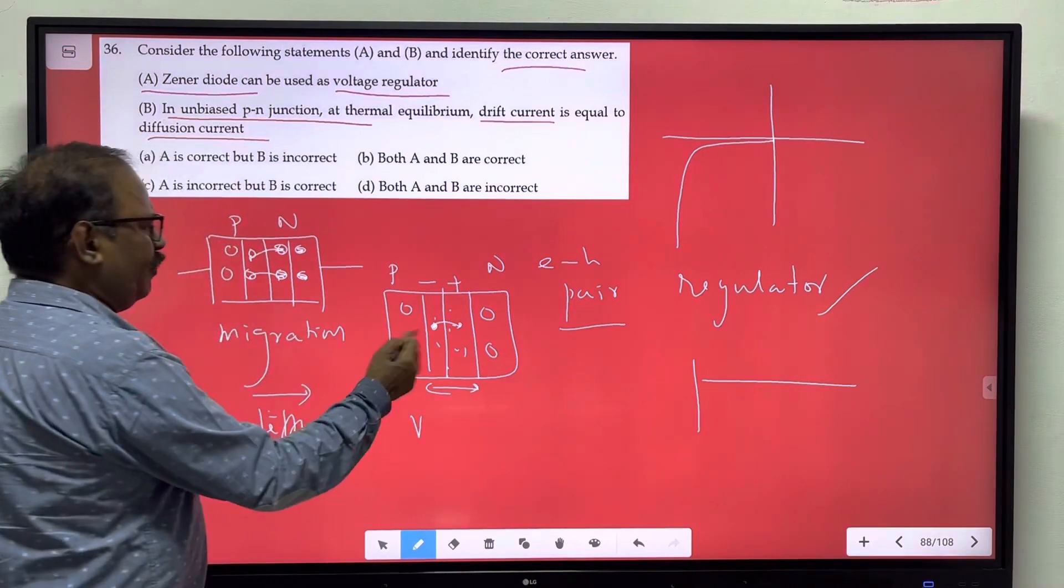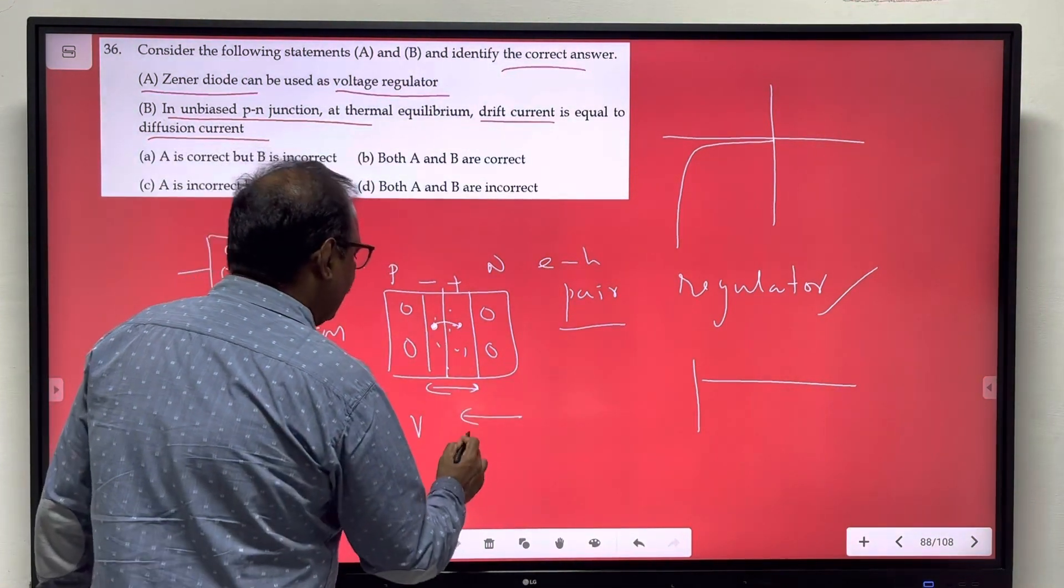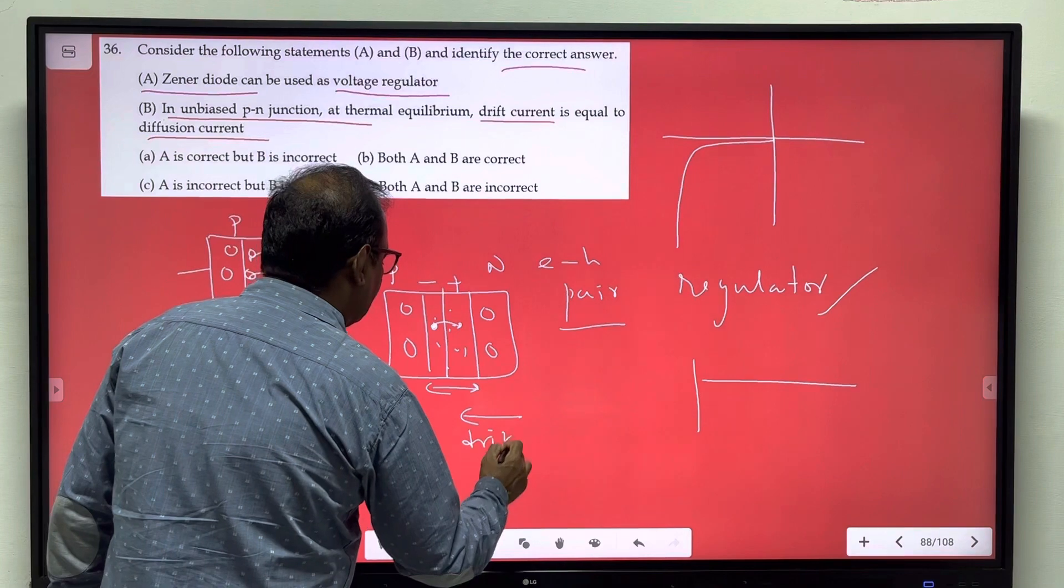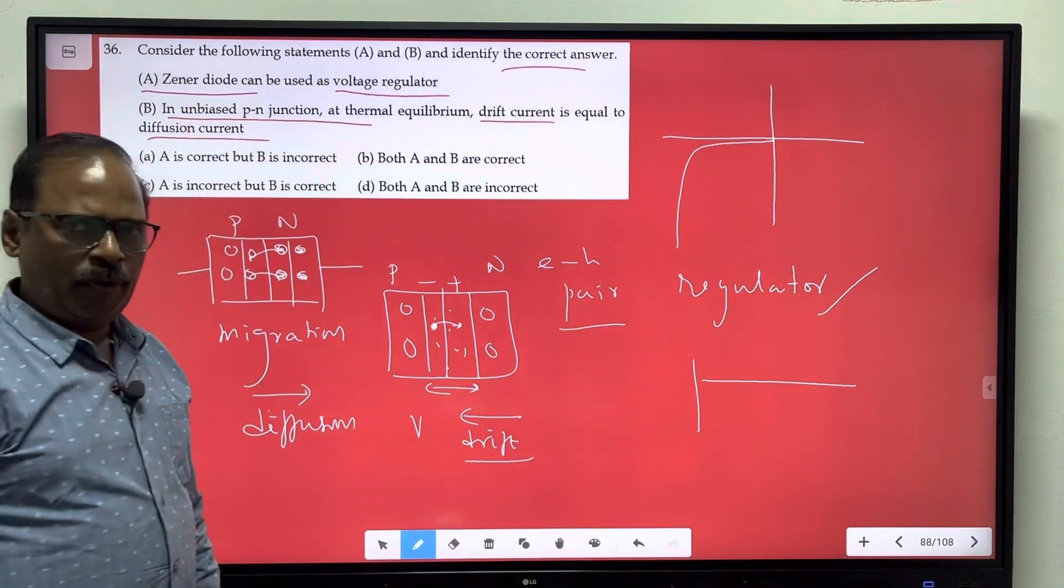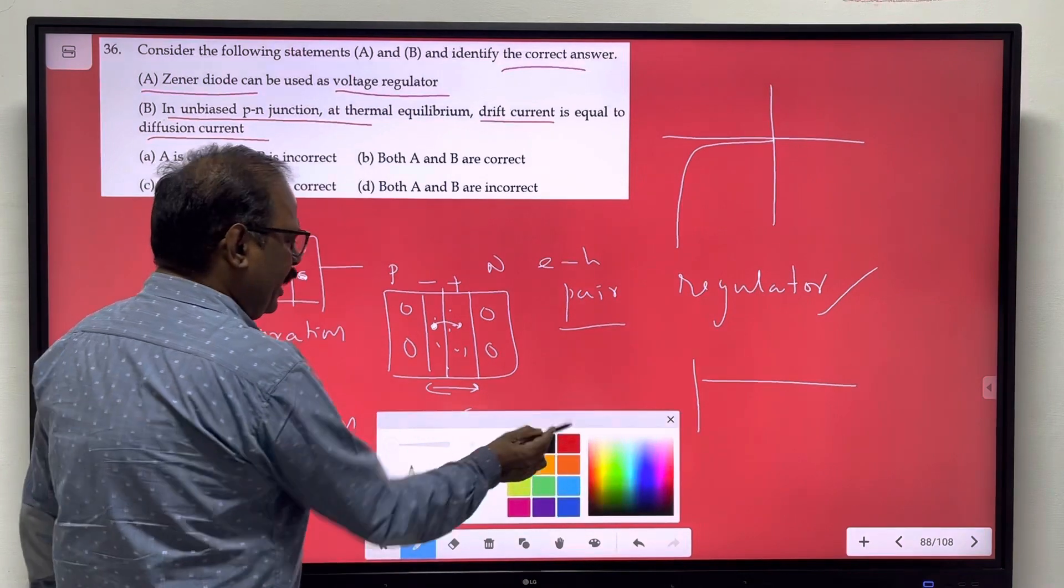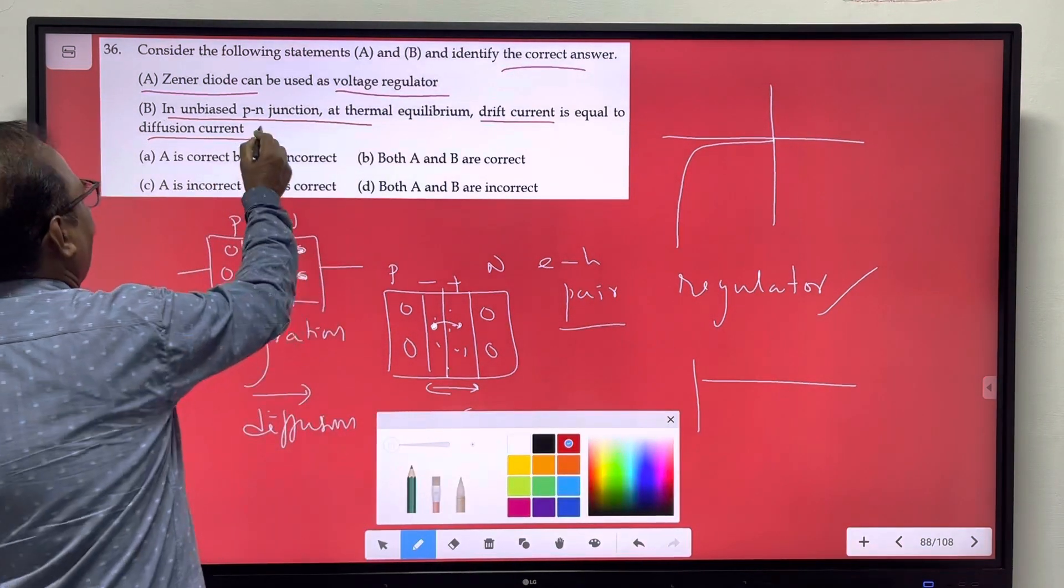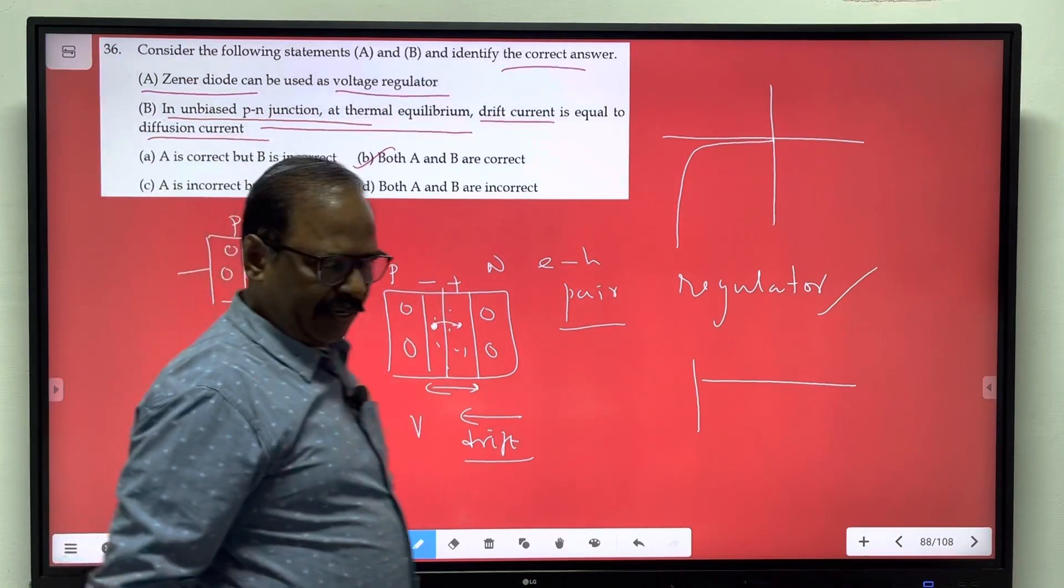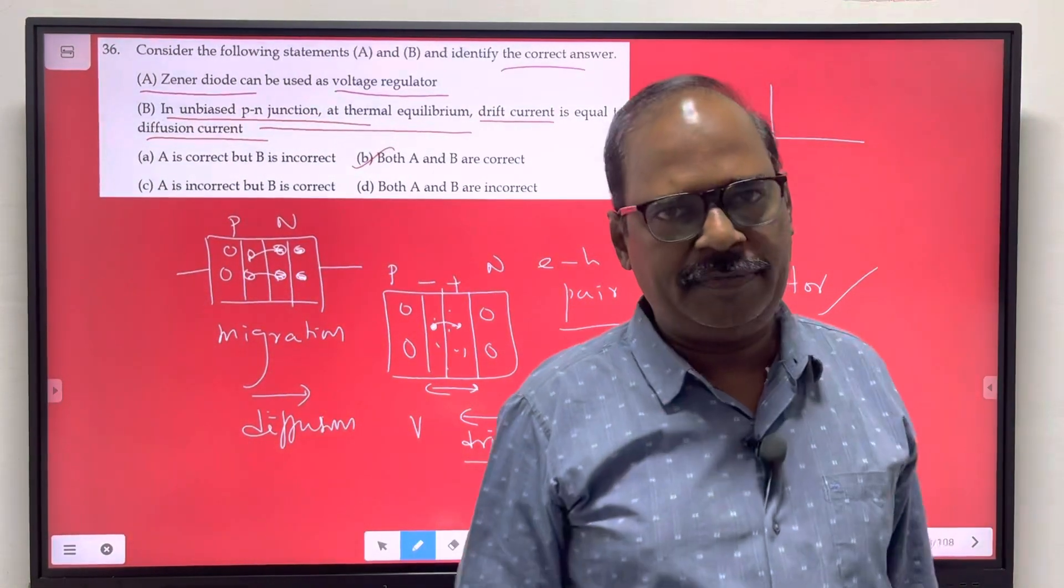The direction of the electron is opposite, and the drift current is because of this drift current. So thermal equilibrium, correct statement. Both A and B are correct. Thank you.